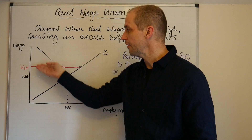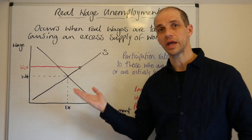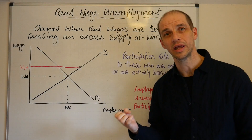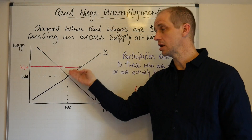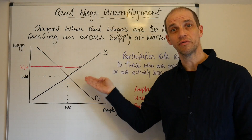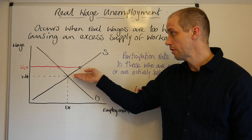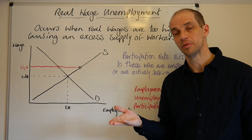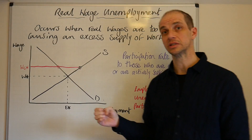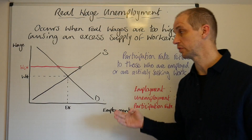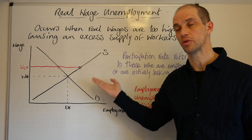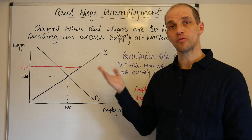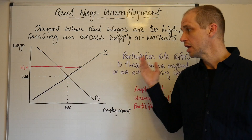If a new higher national minimum wage or a higher living wage is introduced, the impact would be to force wages up beyond the equilibrium level — and it must do that for it to have any effect or influence on the marketplace. We can see that represented by the red line.